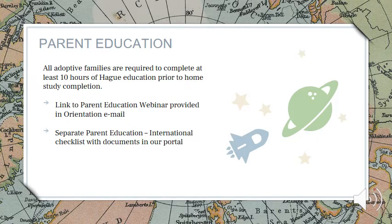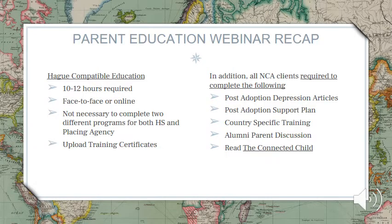When you open the portal, you have access to an orientation document checklist as well as a separate checklist for international parent education documents. A link was provided to a webinar explaining Nightlight's parent education requirements — if you've not yet watched this, you must do so that your parent education will not be delayed. All families are required to complete 10 hours of Hague education prior to completing your home study. Additional requirements consist of reading about and understanding post-adoption stress and depression, completing a post-adoption support plan, learning about the history and culture of your child's country, speaking with a parent who has previously adopted through Nightlight, and reading a book entitled The Connected Child.